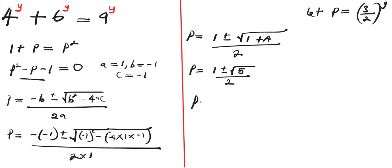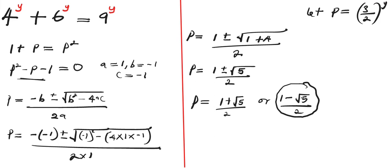This gives us two solutions: p = (1 + √5) / 2, or p = (1 - √5) / 2. However, the second solution gives a negative number. Since p = (3/2)^y must be positive, the negative solution is rejected. So p = (1 + √5) / 2.